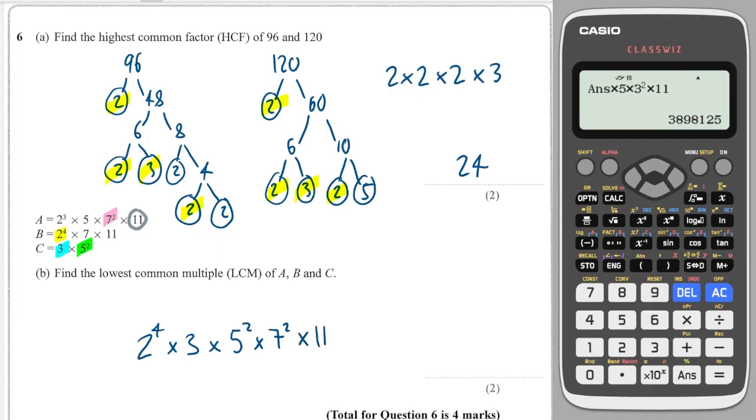So we get my calculator out and we do 2 to the 4 multiply by 3 times 5 squared times by 7 squared times by 11, and we get 64680.